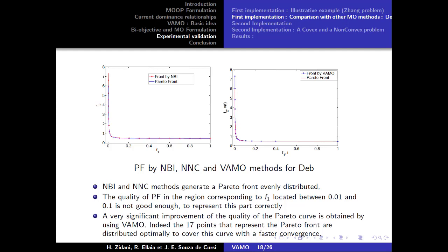Indeed, 17 points that represent the Pareto front are distributed optimally to cover this curve with a faster conversion than the other methods.